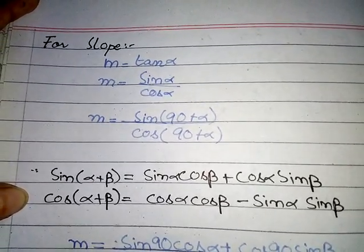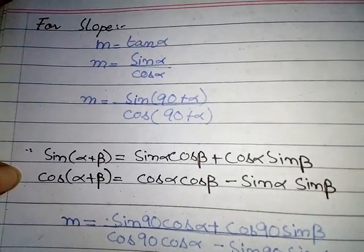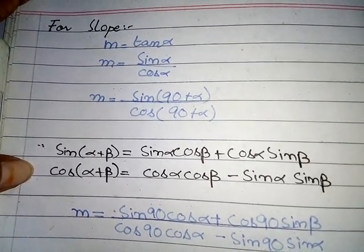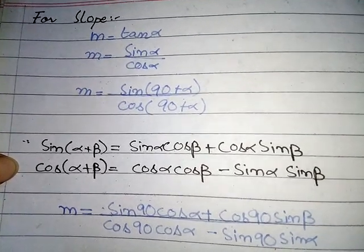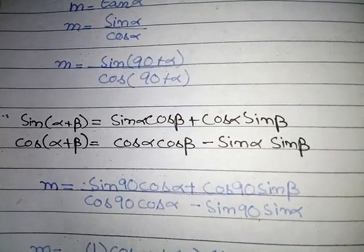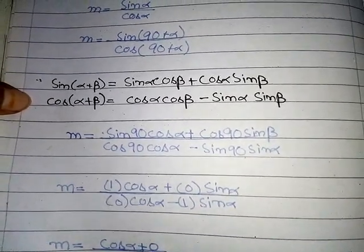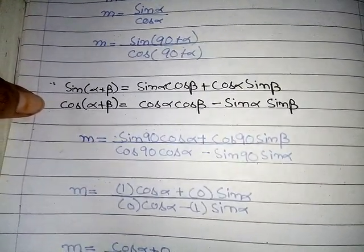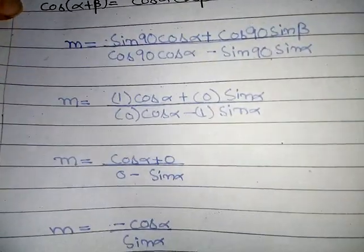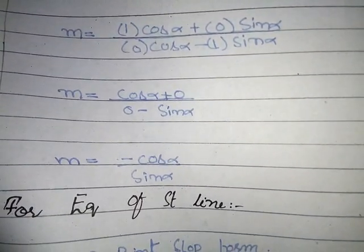So m = sin(90° + α) / cos(90° + α). Using the addition formulas: sin(α + β) = sinα cosβ + cosα sinβ, and cos(α + β) = cosα cosβ - sinα sinβ. Applying these, m = -cosα / sinα.